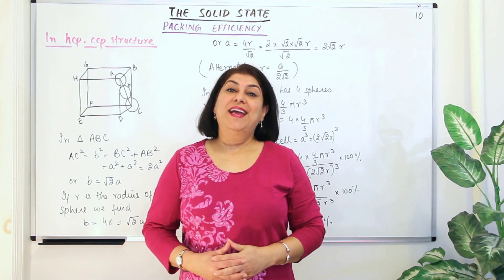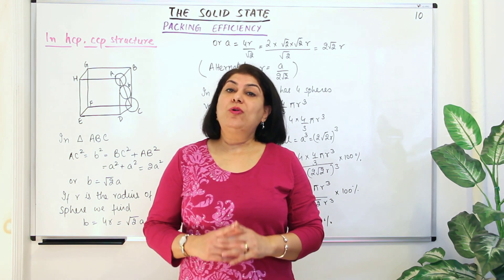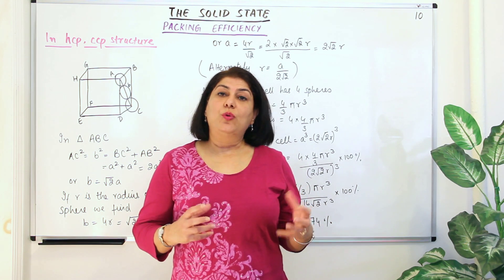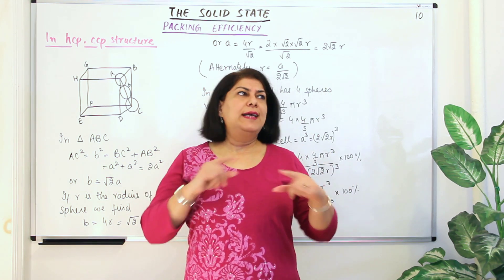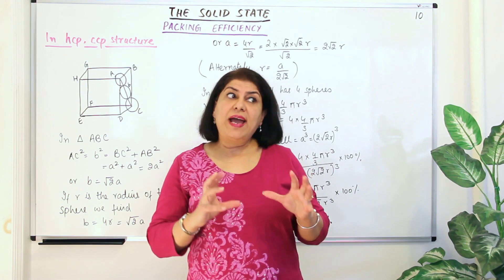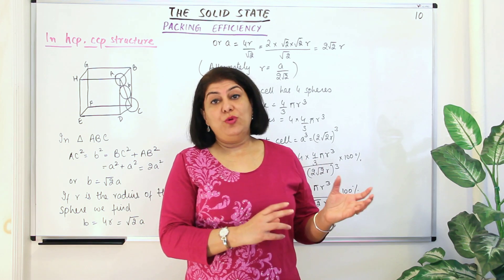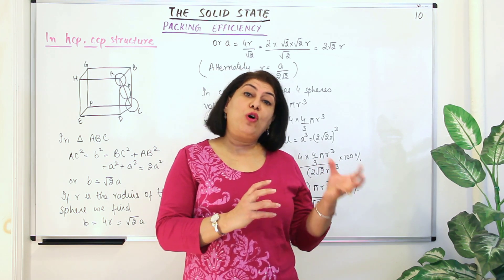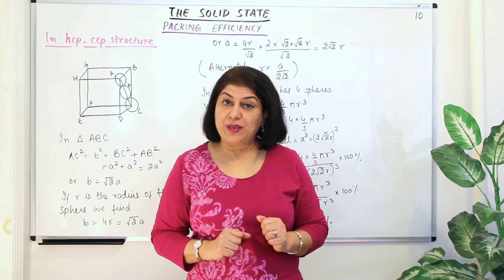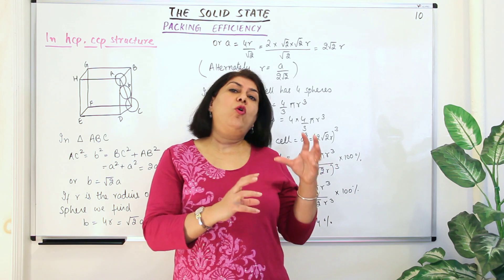Hello, I'm Seema and welcome to part 10 of the chapter the solid state. I'm now going to start explaining packing efficiency to you. As you know, in a unit cell the entire space is not occupied by the spheres. You have empty spaces which are known as voids. In the previous video I explained the placement of octahedral and tetrahedral voids in a face-centered cubic unit cell, so we understand that these voids are always present.